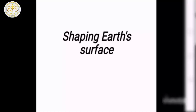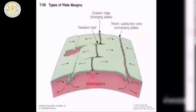We are going to talk about shaping Earth's surface. We have learned that the distribution of continents on Earth's surface is caused by slow motion of tectonic plates. How do tectonic plates move? Plates might move apart, plates might collide together, and they might move side by side. As plates move relative to each other, they form different types of boundaries. The type of boundary depends on the relative motion of the plate.